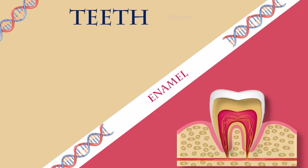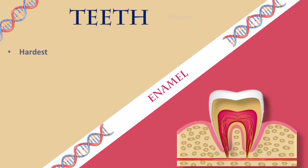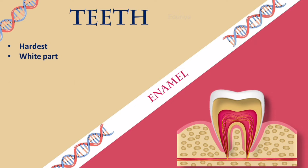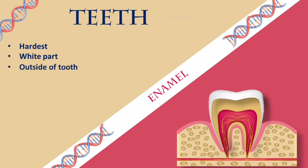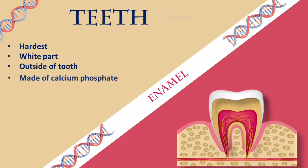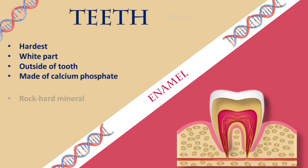Enamel. Enamel is the hardest white part of the tooth. It is on the outside of the tooth. Enamel is mostly made up of calcium phosphate, a rock-hard mineral.